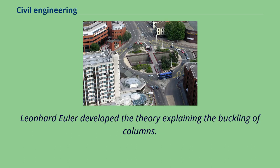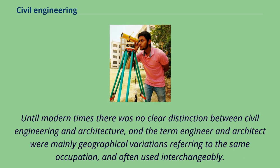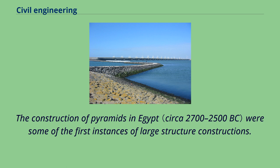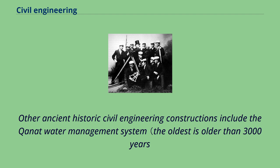Leonhard Euler developed the theory explaining the buckling of columns. Until modern times there was no clear distinction between civil engineering and architecture, and the terms engineer and architect were mainly geographical variations referring to the same occupation, and often used interchangeably. The construction of pyramids in Egypt were some of the first instances of large structure constructions. Other ancient historic civil engineering constructions include the Kanaat water management system, the oldest of which is older than 3000 years.